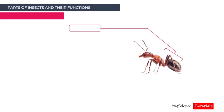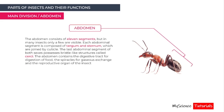The last segment is the abdomen, which consists of 11 segments, though in many insects only a few are visible. Each abdominal segment is composed of a tergum and sternum joined by the cuticle. The last abdominal segment bears bristle-like structures called cerci. The abdomen contains the digestive tract for digestion of food, spiracles for gaseous exchange, and the reproductive organs of the insect.